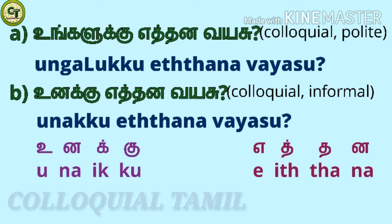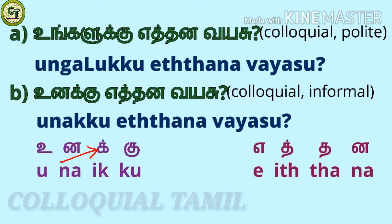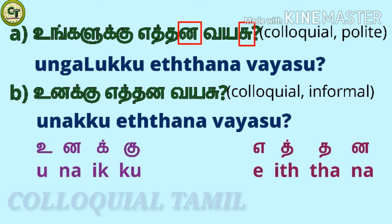The informal form is 'UNAKKU YETHNAVAYASU'. For 'UNAKKU': U, a short sound vowel; N, a short sound letter; IK, a consonant; KU, a short sound letter — together: UNAKKU. UNAKKU YETHNAVAYASU. When comparing the formal and the colloquial form of this sentence, only a small change is made — 'YETHNAVAYADU' changes to 'YETHNAVAYASU'. Only the last letter of both words changes.